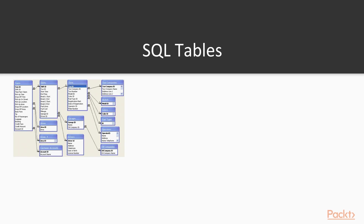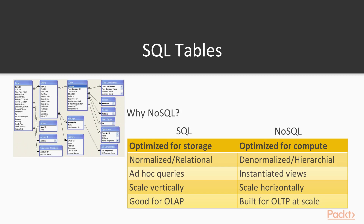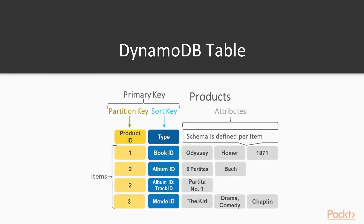We're all familiar with SQL databases and their relational table structure in which every table has a fixed set of columns. SQL is meant for data storage, whereas NoSQL is meant for fast compute. In DynamoDB tables, or any NoSQL database, columns can be defined, but it's defined per item, or row, rather than for the entire table.